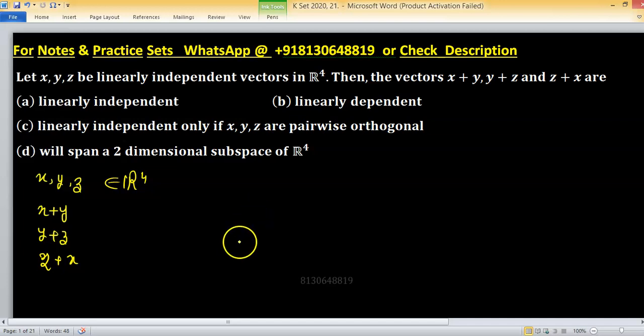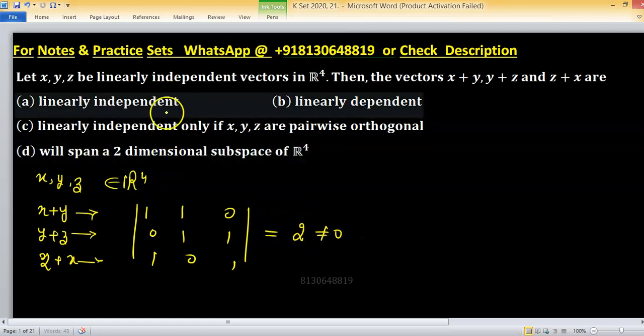So first we will check linearly independent or dependent. How do we check? Suppose these three are vectors and I am trying to form a matrix representation of these three vectors. So first row is 1,1,0, second is 0,1,1, and third is 1,0,1. Make other entries as 0 and try to find determinant of this matrix. Determinant of this matrix is 2, not equals to 0. That's why these three are linearly independent.